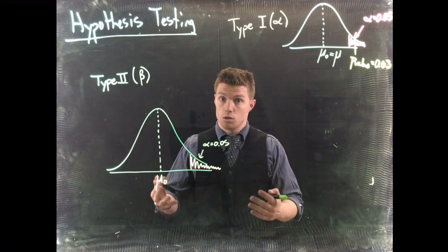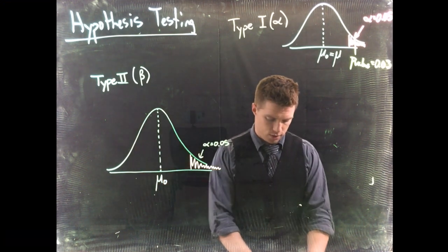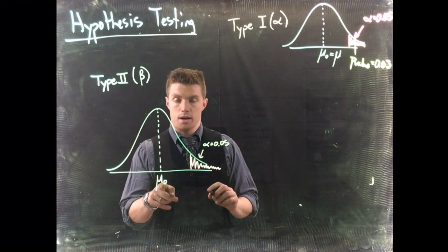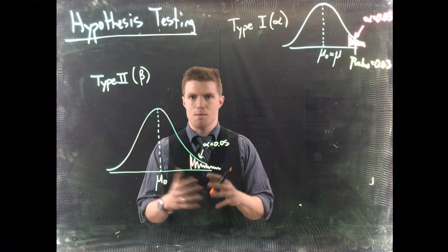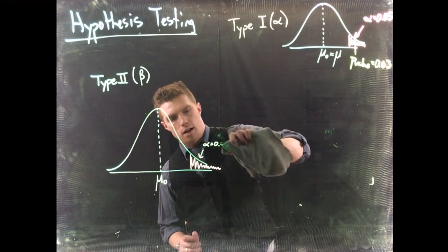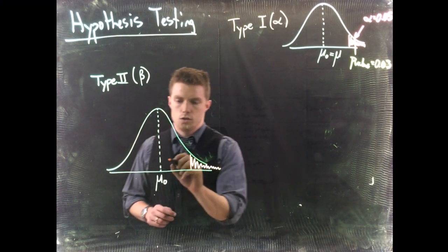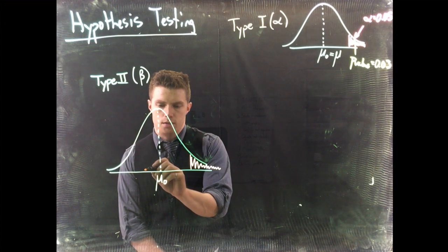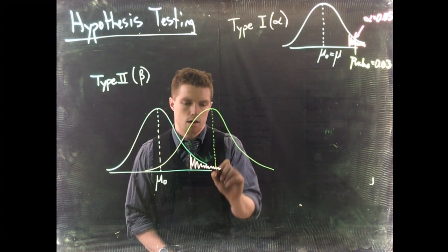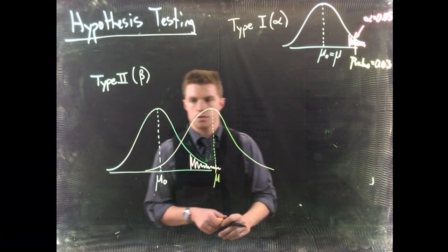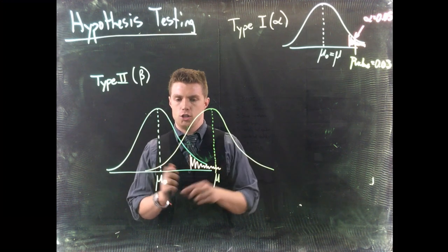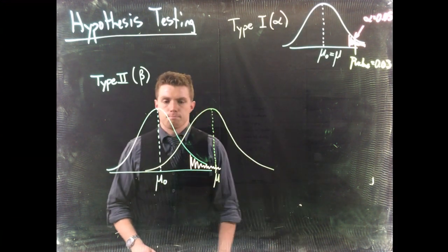If we can get into the rejection region we'll reject the null hypothesis; if not, we fail to reject. Now let's say we're some omniscient being and we actually know what the true mean is. The null hypothesis places the mean here, but the true mean is actually over here — that's the actual mu. Normally we don't know this true value.